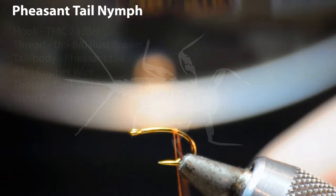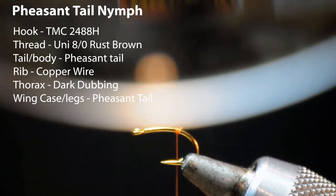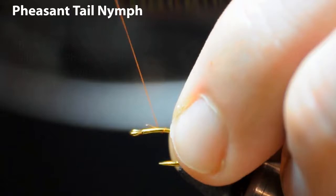Welcome. Here I'm tying a standard pheasant tail nymph just on a short shank hook. Sometimes it's advantageous to use a wide gape hook on small flies, especially if you're fishing to larger fish.